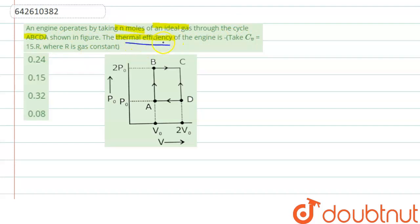What is thermal efficiency? It is η (eta), and it is defined by the work divided by heat given. Work done in this case is P₀V₀. So we have to find out the heat given, then we can find the thermal efficiency.